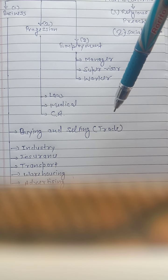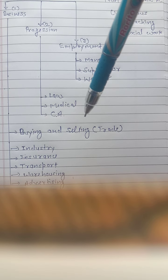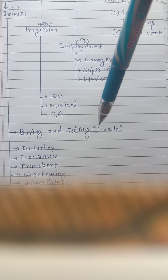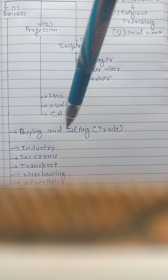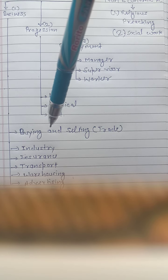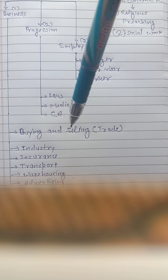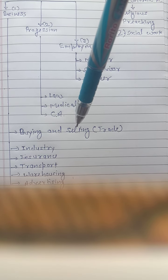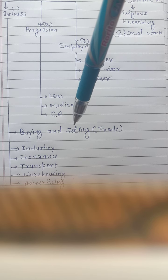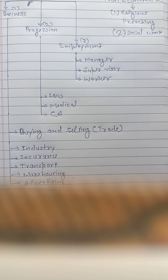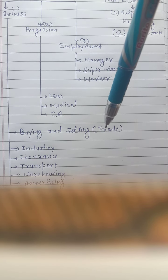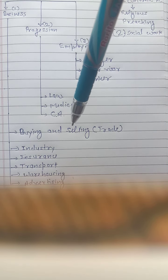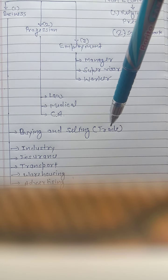First is buying and selling. Businesses involved in trade are working in buying and selling. They buy things from the market and sell them at a little profit. That is their profession or business — this is called trade. Generally, buying and selling is the technical word for trade.